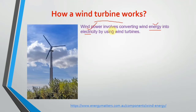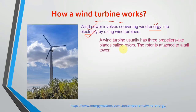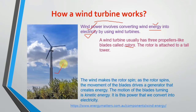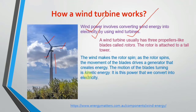A wind turbine usually has three rotors. The rotor is attached to a tall tower. The wind makes the rotor spin, and the motion of the blades drives a generator that creates energy. The motion of the blades turning is kinetic energy.